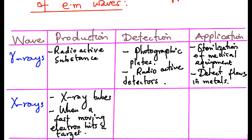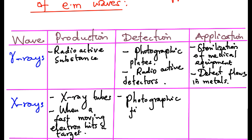Detection: X-rays are detected using photographic films or fluorescent screens.